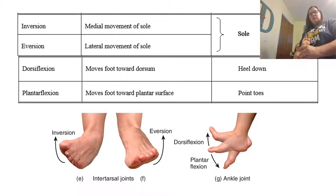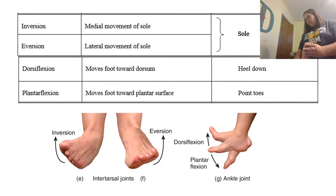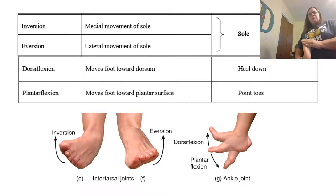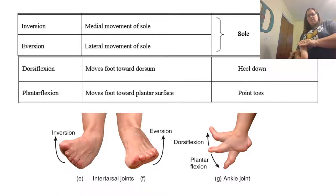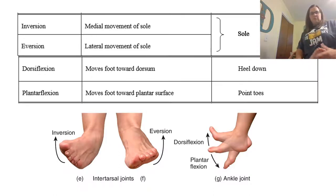We also have dorsiflexion. Dorsiflexion is when your heel goes down — you pull your toes up. And plantar flexion is when you point your toes. So dorsiflexion is when it's pulled up, and plantar flexion is when you point the toes.